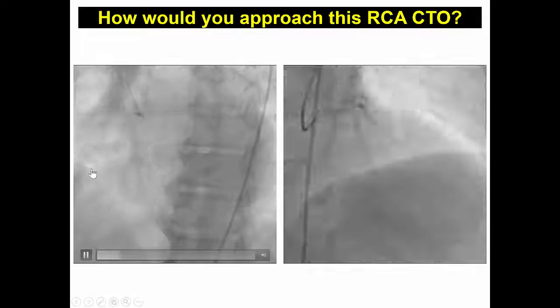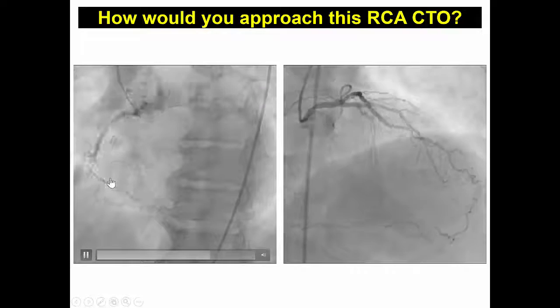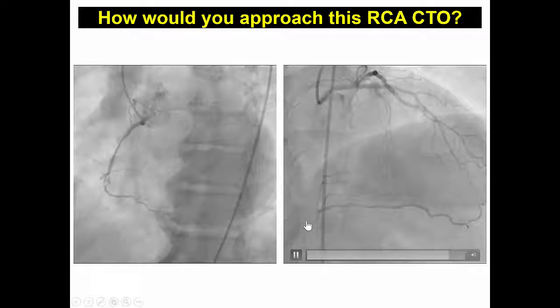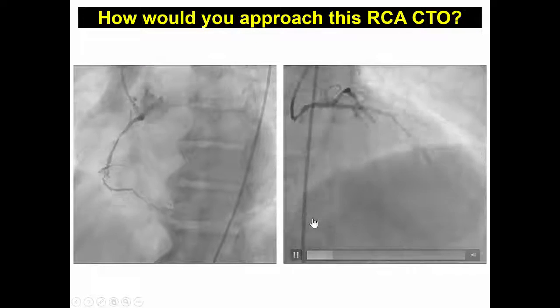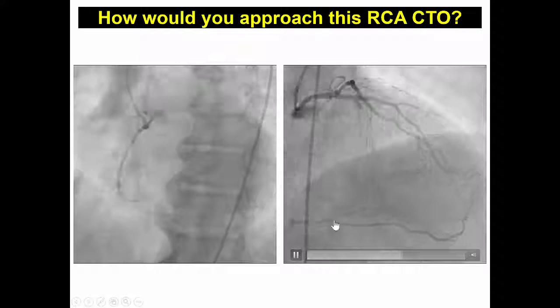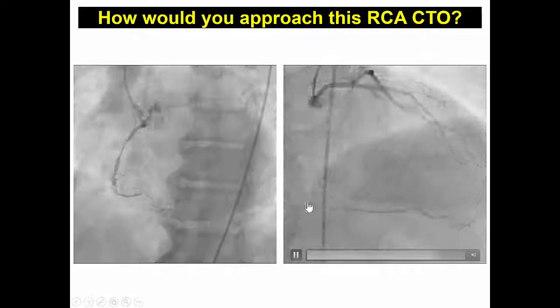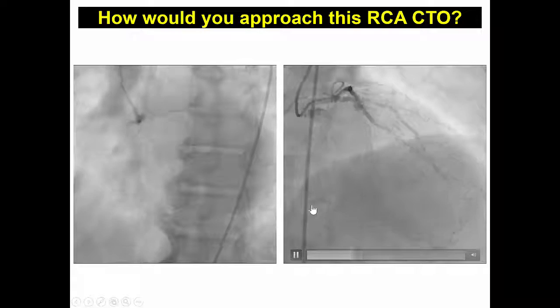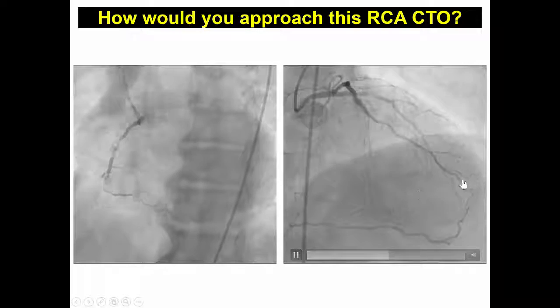Regarding the CTO, there is a very well-defined proximal cap and it appears to be a long occlusion with reconstitution of the right coronary at the crux of the PDA and PLV.